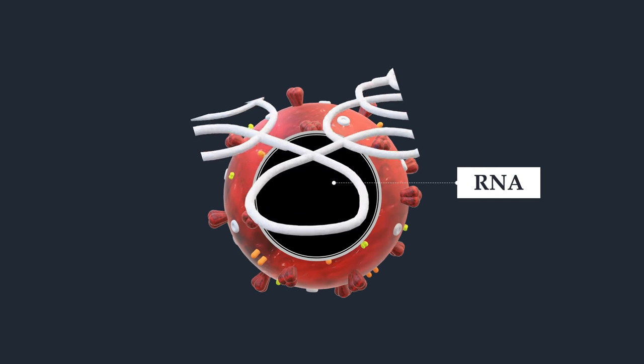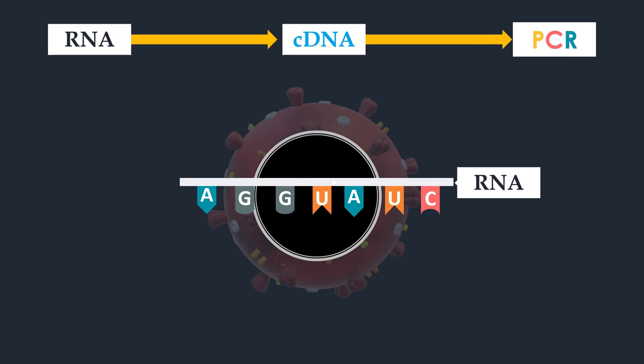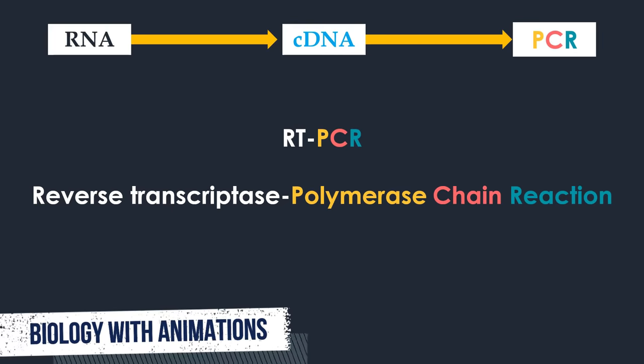To detect these viruses with PCR, RNA molecules must be converted into their complementary DNA sequences by reverse transcriptase. Then the newly synthesized DNA can be amplified by standard PCR procedures. This approach is universally known as RT-PCR.